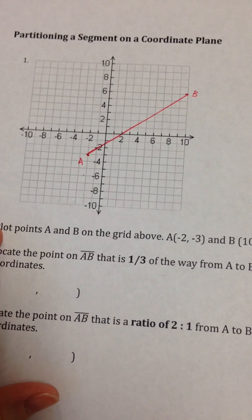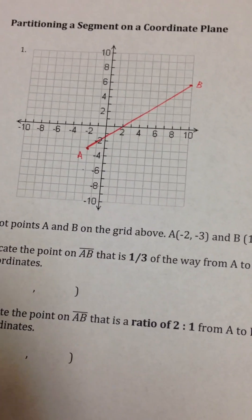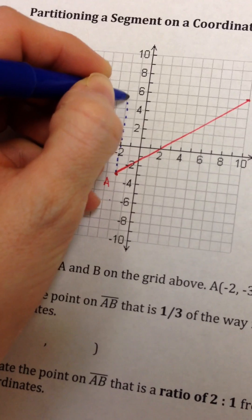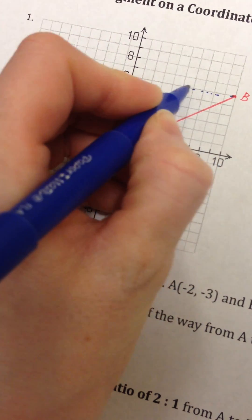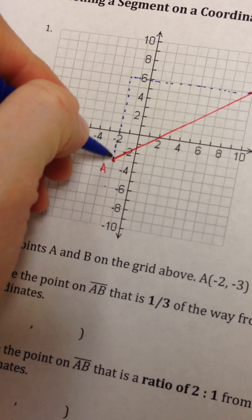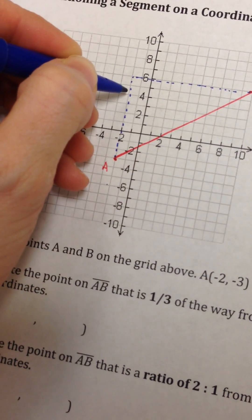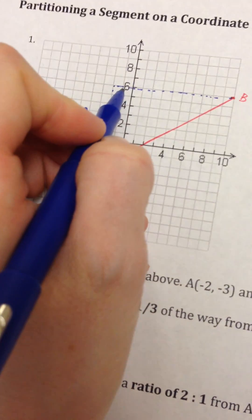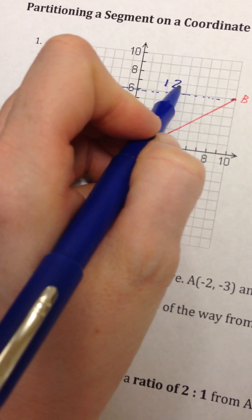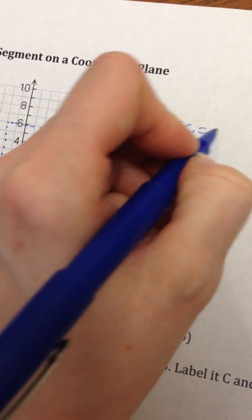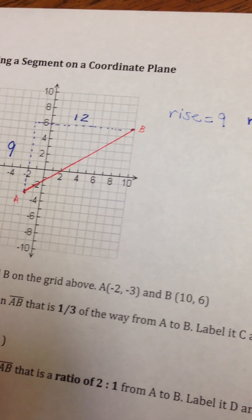When we talk about slope, we're talking about rise over run. You can draw a right triangle to show the rise and the run and count the squares. If I count how many squares vertically, I get 9. And if I count how many squares horizontally, I get 12. So my rise or vertical distance is 9, and my run or horizontal distance is 12.